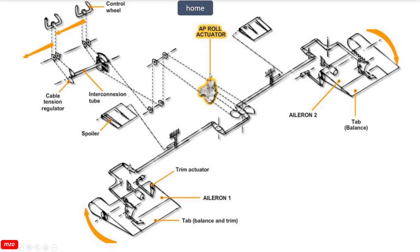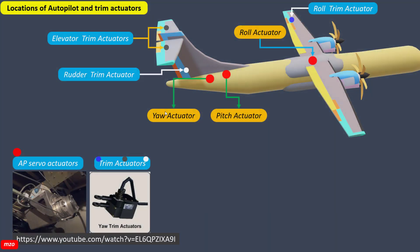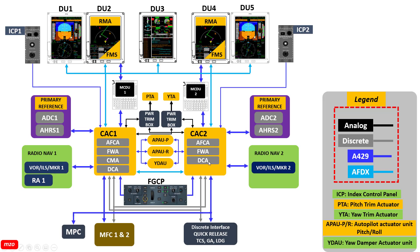This is the location of the AutoPilot roll actuator unit. This is our aileron trim actuator and this is the AutoPilot roll actuator. These are the AutoPilot control systems for the ADR submodule 600.